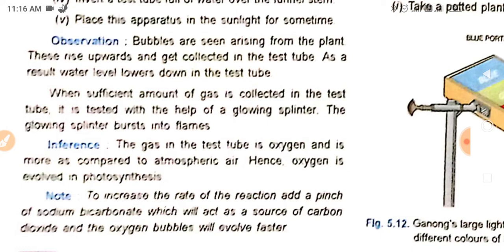When a sufficient amount of gas is collected in the test tube, it is tested with the help of a glowing splinter. The glowing splinter bursts into flames because, as we know already, oxygen is necessary for catching fire.